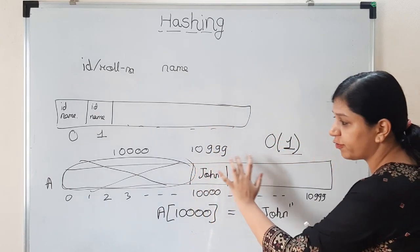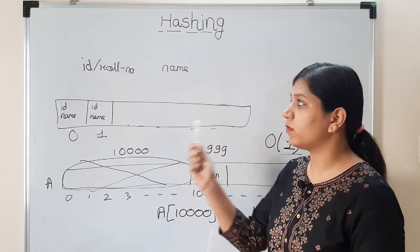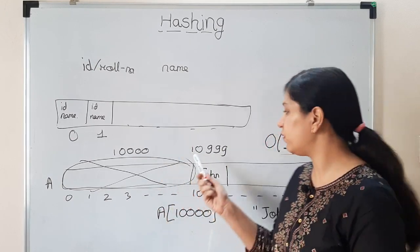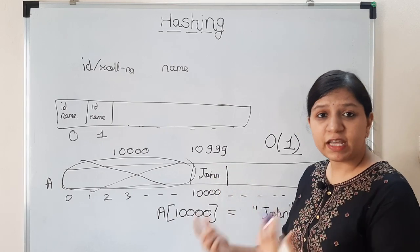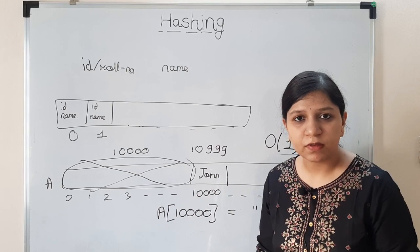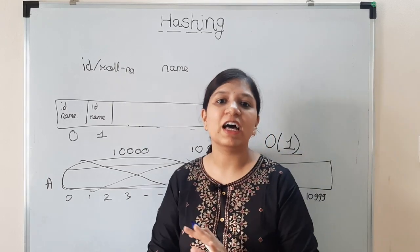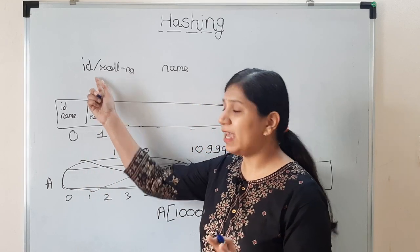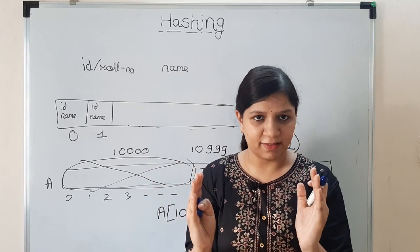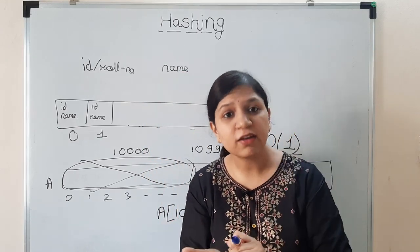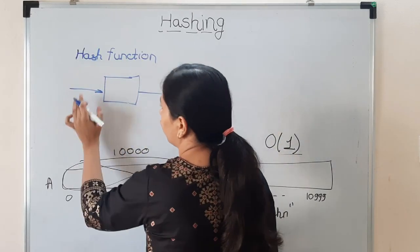We understood now that the problem here is large space is getting wasted, and we don't know - maybe tomorrow the size of this array we may need to increase. Currently the maximum ID or the roll number's value is 10,999. Tomorrow if the number of students increases, it could go beyond one lakh. So the size of the data is currently arbitrary - the key could be arbitrary. We need to make it fixed size.